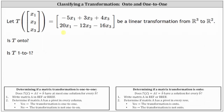To do this, we'll write T of vector x in the form T(x) = A times vector x. Once we determine matrix A, if we write it in row echelon form or reduced row echelon form and identify the pivots: if there are pivots in every column, the transformation is one-to-one; if there are pivots in every row, the transformation is onto.